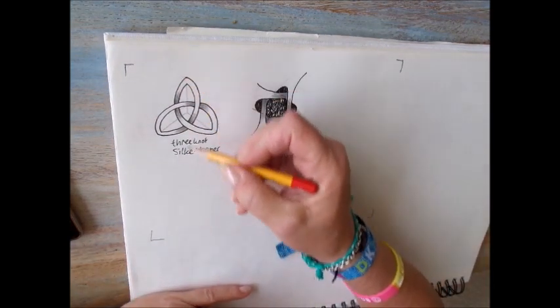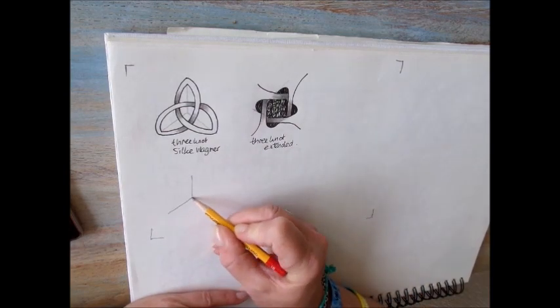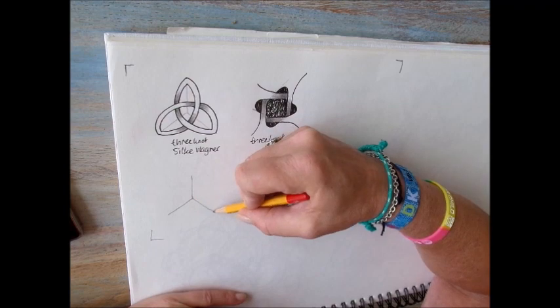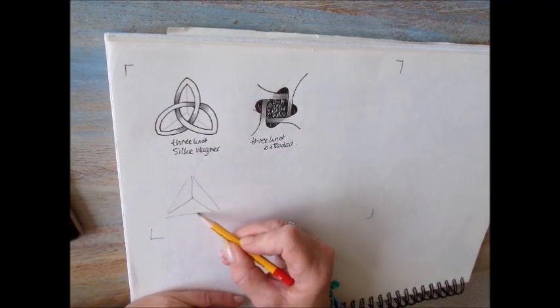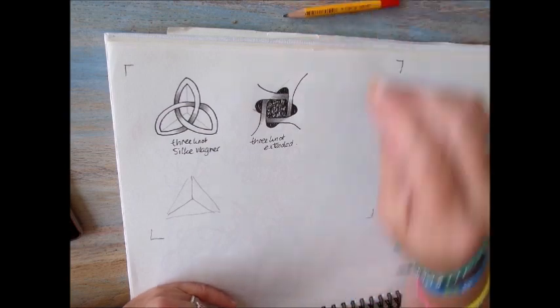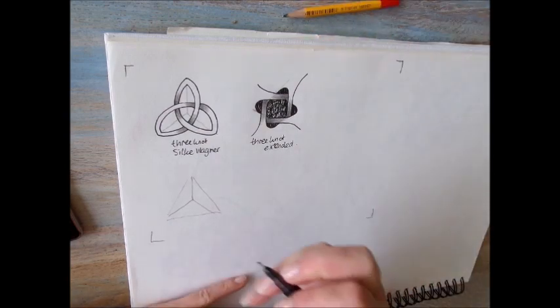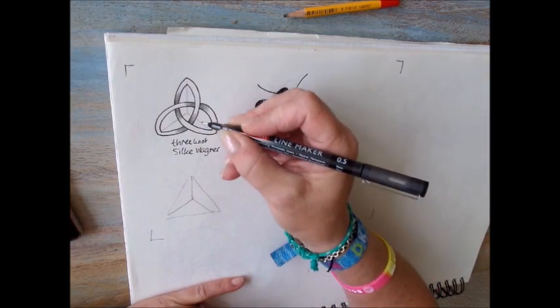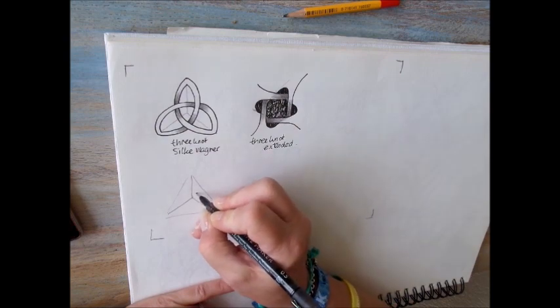Again, like the first one, draw three lines in the shape of a nice triangle. The first step is the same as with three knots and goes like this.